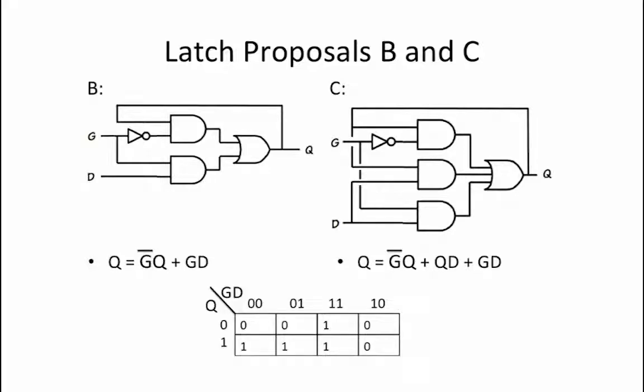If you create a Karnaugh map for both of these logic functions, you see that the q, d term is redundant because it doesn't add any additional ones to the Karnaugh map. This means that logically the two functions are equivalent, but the effect of the extra term is that it makes the implementation lenient. So Proposal C is good and Proposal B is bad.